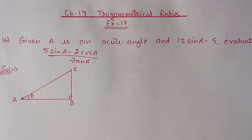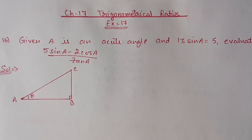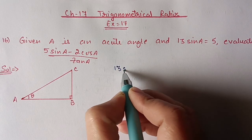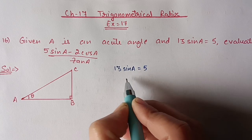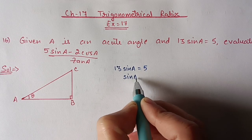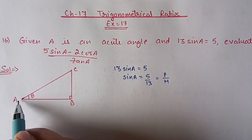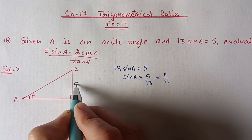Hello students, we are doing Chapter 17 Trigonometrical Ratios, Exercise 17. In today's video we are starting from question number 16. Given A is an acute angle and 13sinA is equal to 5, evaluate (5sinA - 2cosA) / tanA. First of all we will make a right angle triangle. We have 13sinA = 5, so sinA = 5/13, and sin is perpendicular by hypotenuse, so perpendicular is 5 and hypotenuse is 13.